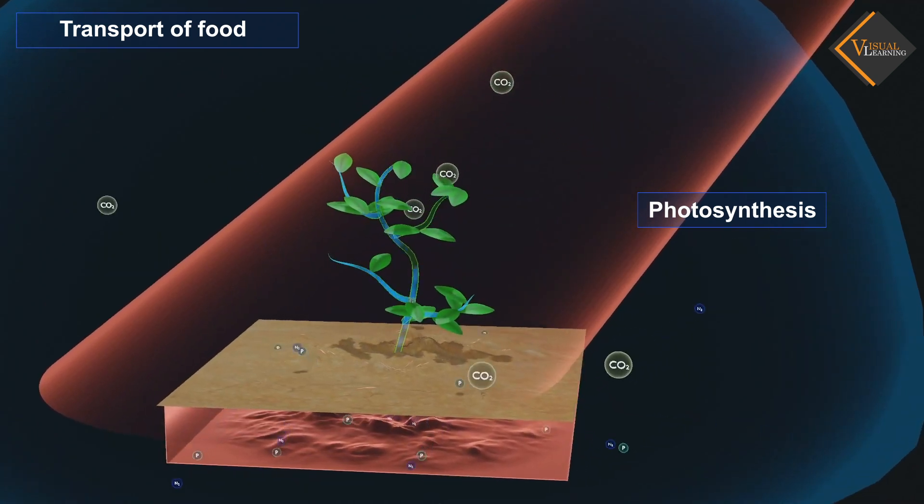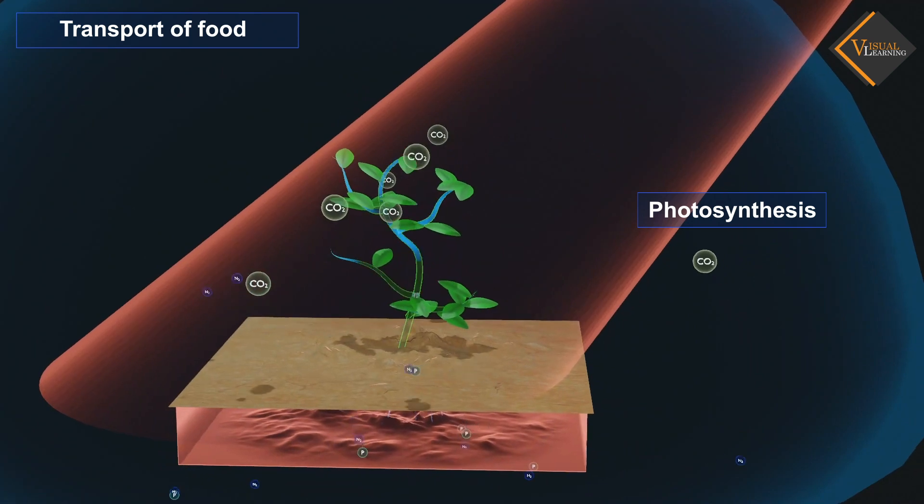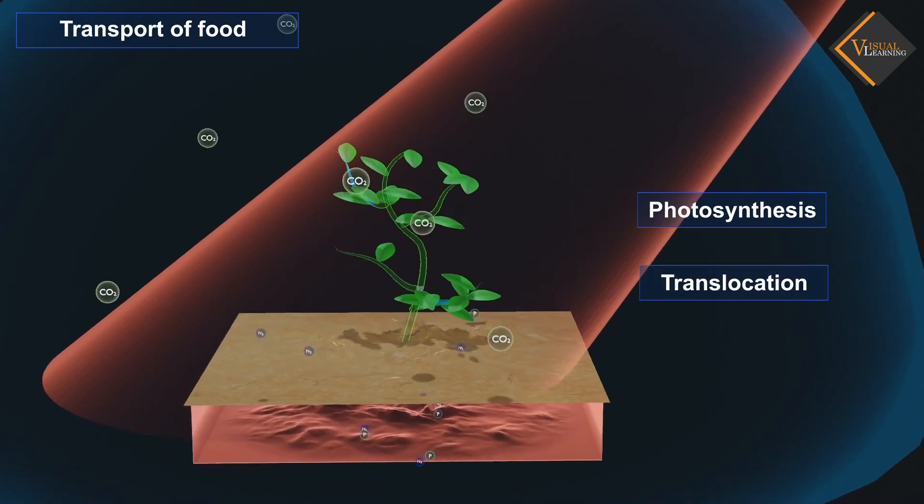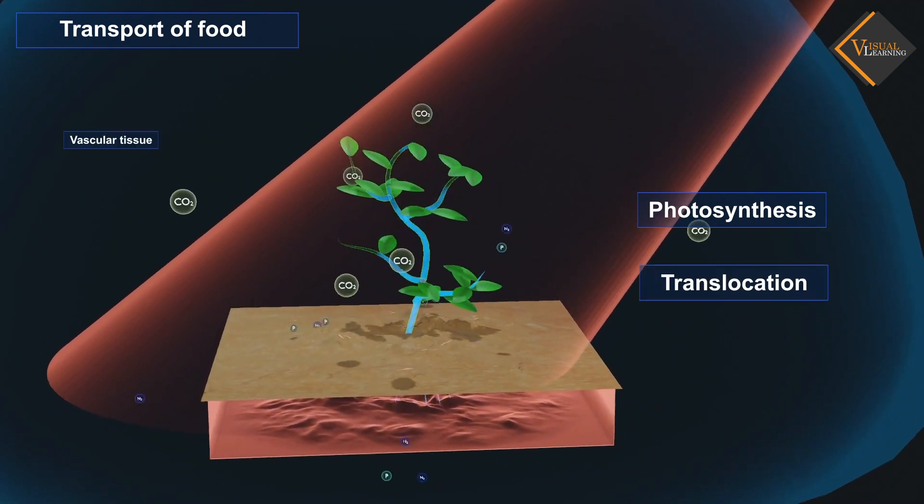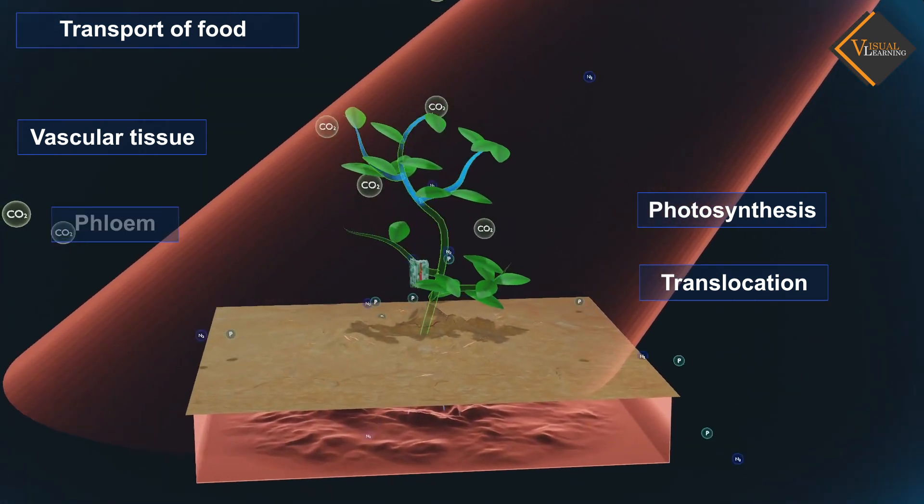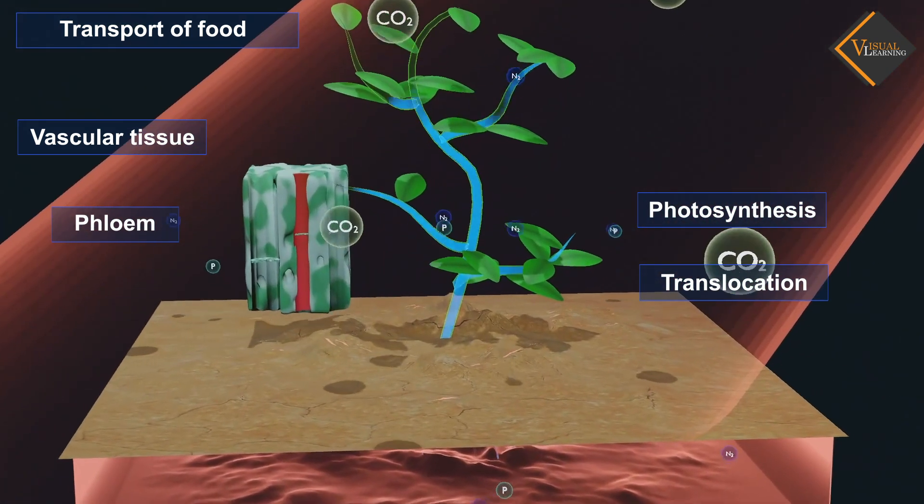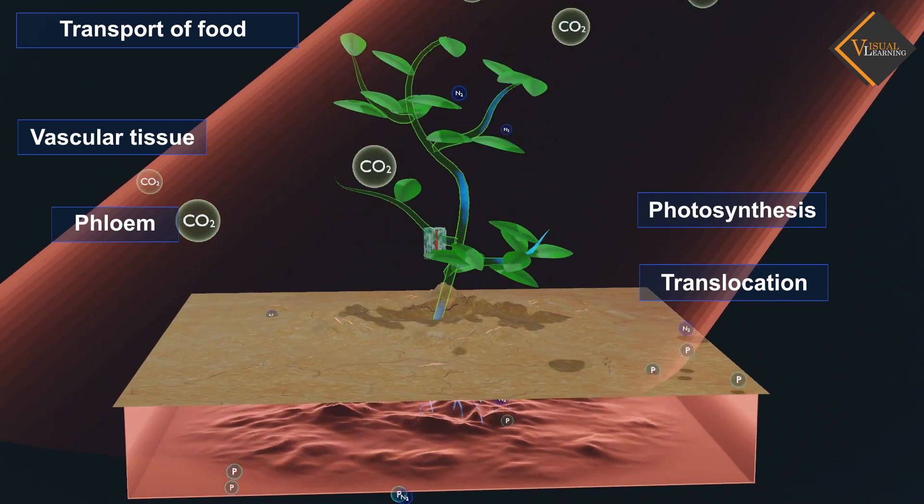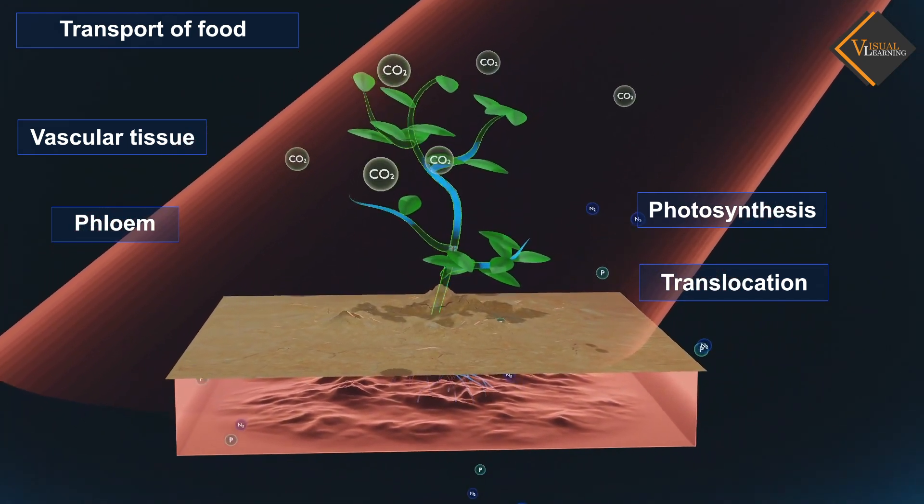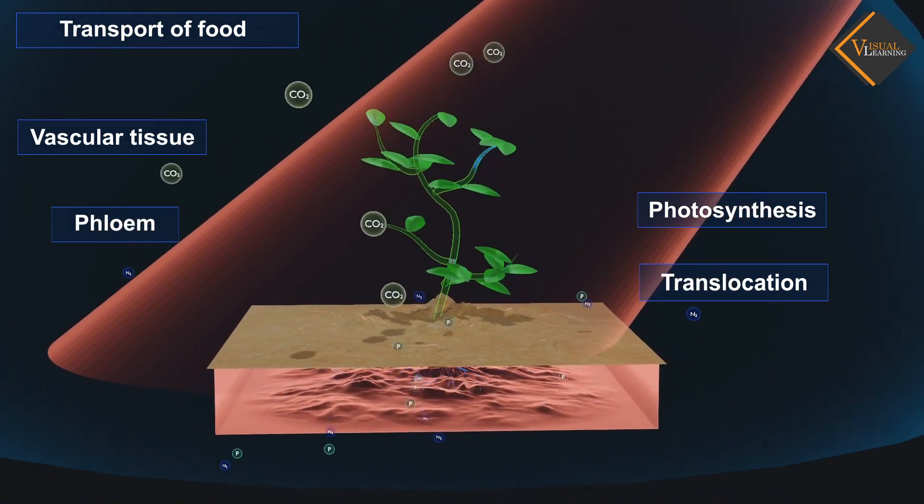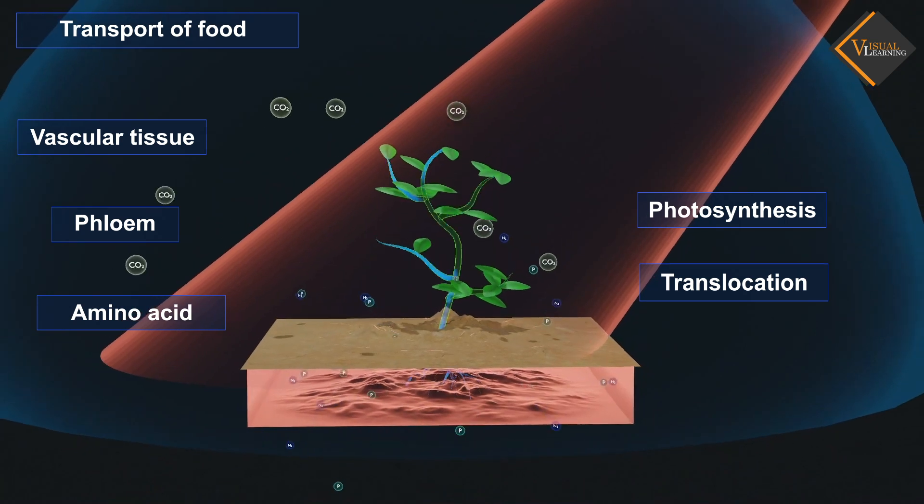This transport of soluble products of photosynthesis is called translocation, and it occurs in the part of the vascular tissue known as phloem. Besides the products of photosynthesis, the phloem transports amino acids and other substances.